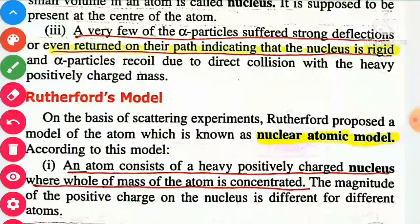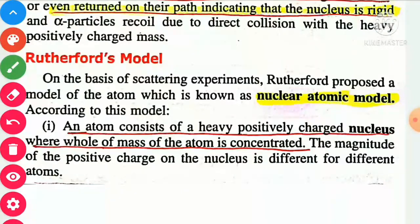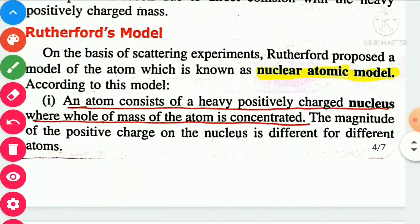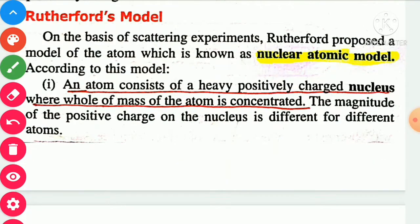Rutherford's model: On the basis of the alpha particle scattering experiment, Rutherford proposed a model of the atom called the nuclear atomic model. According to Rutherford's nuclear atomic model, an atom consists of a heavy positively charged nucleus where the whole mass of the atom is concentrated. The magnitude of the positive charge on the nucleus is different for different atoms.